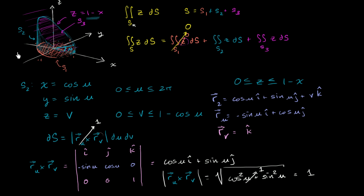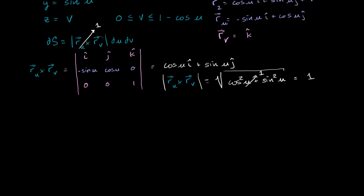Where we left off in the last video, we were focused on surface 2 — the blue outside of our chopped cylinder. We found a decent parameterization, and given that parameterization we were able to come up with ds for that surface. All that business simplified to 1, so ds just equals du dv. Now we are ready to evaluate the surface integral.